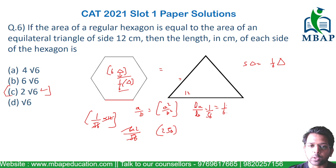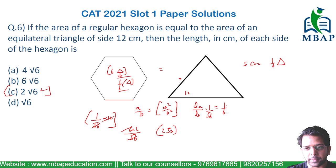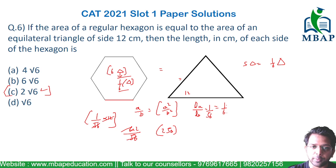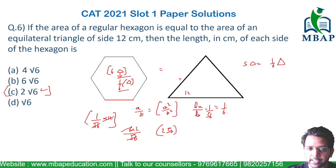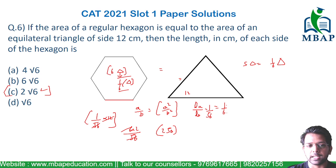Quite an easy question. Either you can solve it by using the formula and equating the area of the hexagon versus the area of the triangle, or you use the property that if a to b is the ratio of length then a² to b² will be the ratio of area. The ratio of area is 1/6 because there are 6 small equilateral triangles that can be formed in the hexagon. So 1/6 relates to 1/√6 as the ratio of length, giving us (1/√6) × 12 = 2√6.